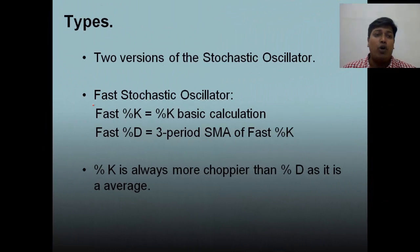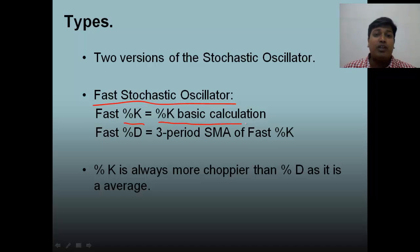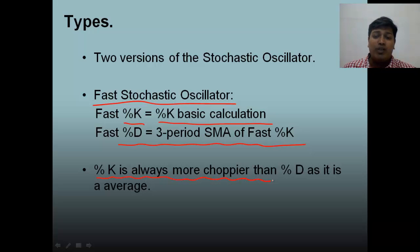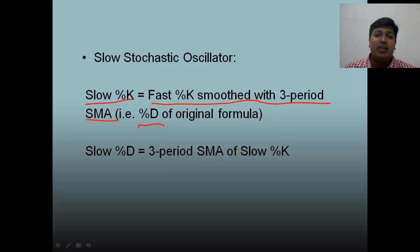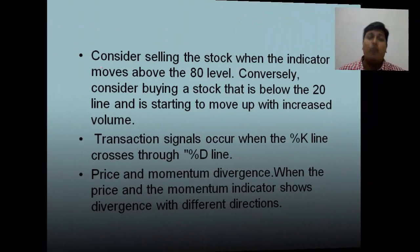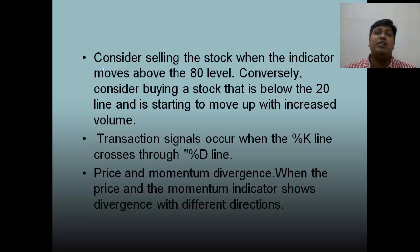There are two types of stochastics: fast stochastics and slow stochastics. For fast stochastics, %K is the basic %K calculated earlier, and %D is the 3-period moving average of %K. Note that %K is always going to be choppier than %D because %D is the moving average of %K. For slow stochastics, slow %K equals fast %K smoothed by a 3-period simple moving average, and slow %D is the 3-period simple moving average of slow %K.